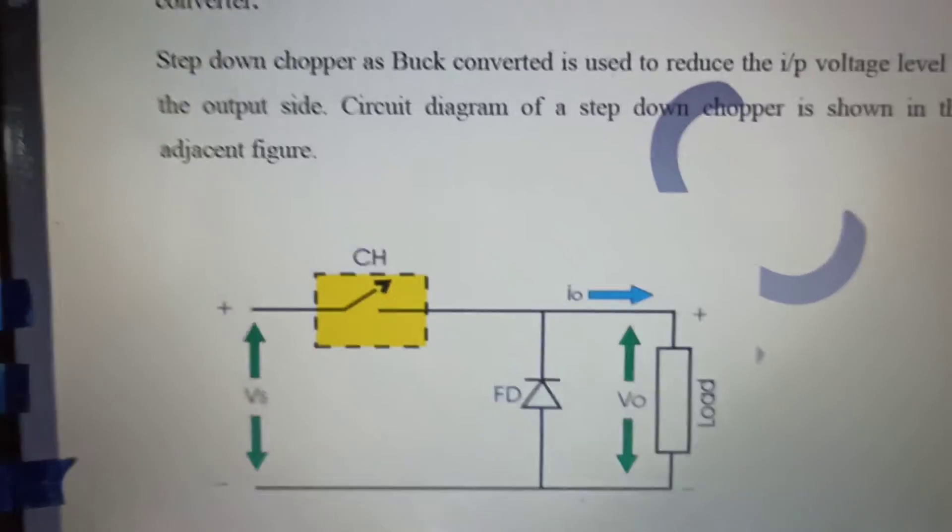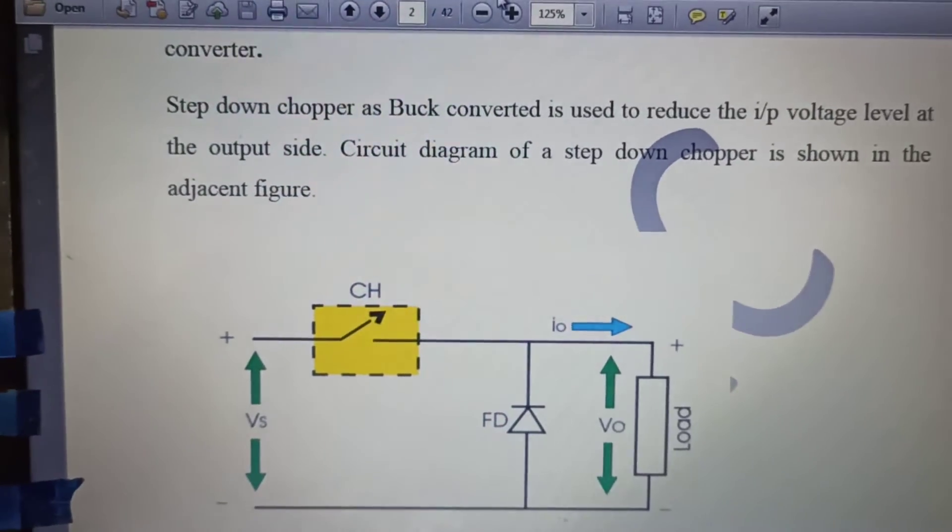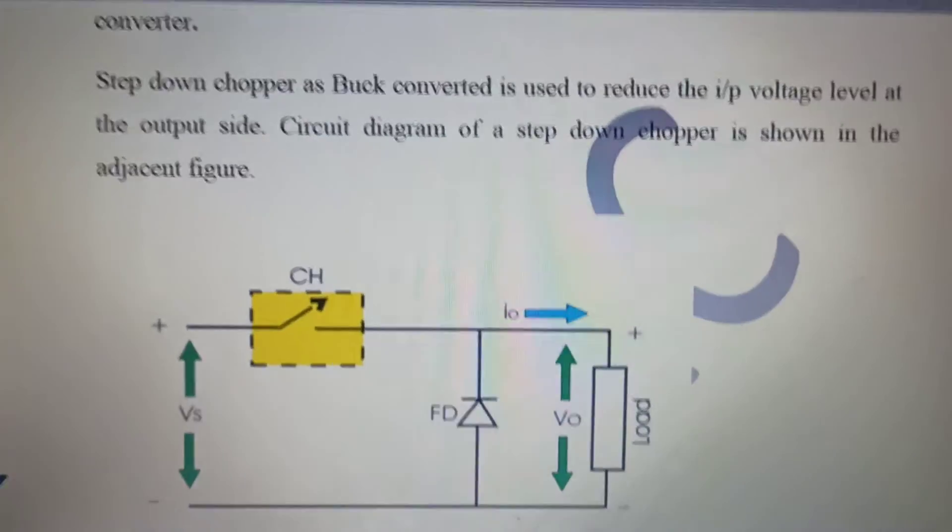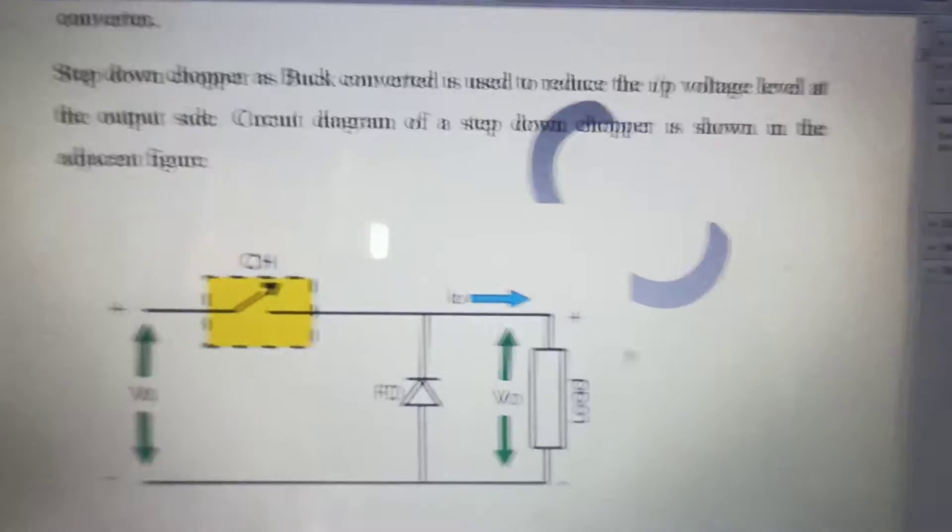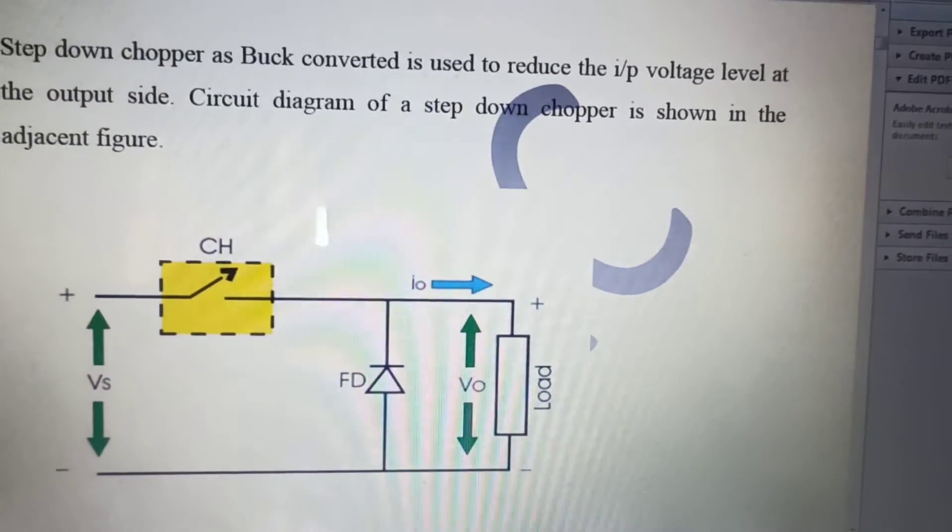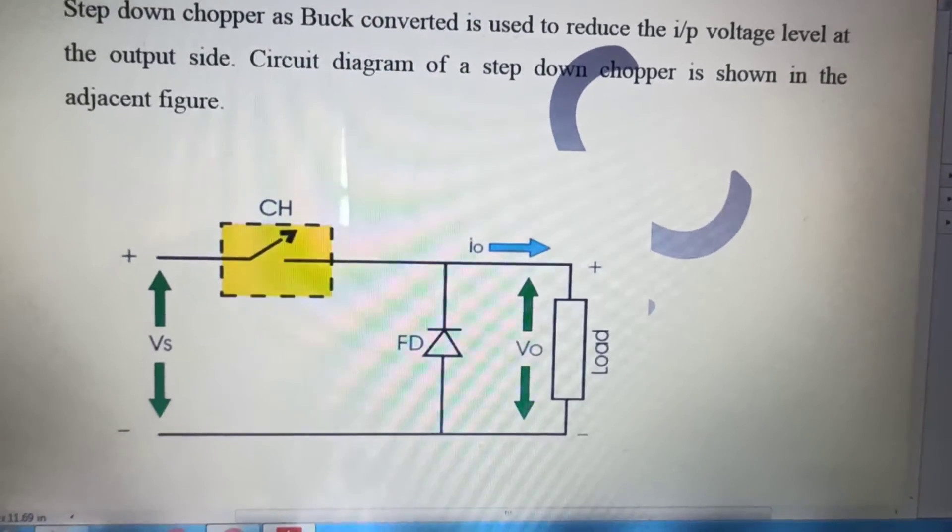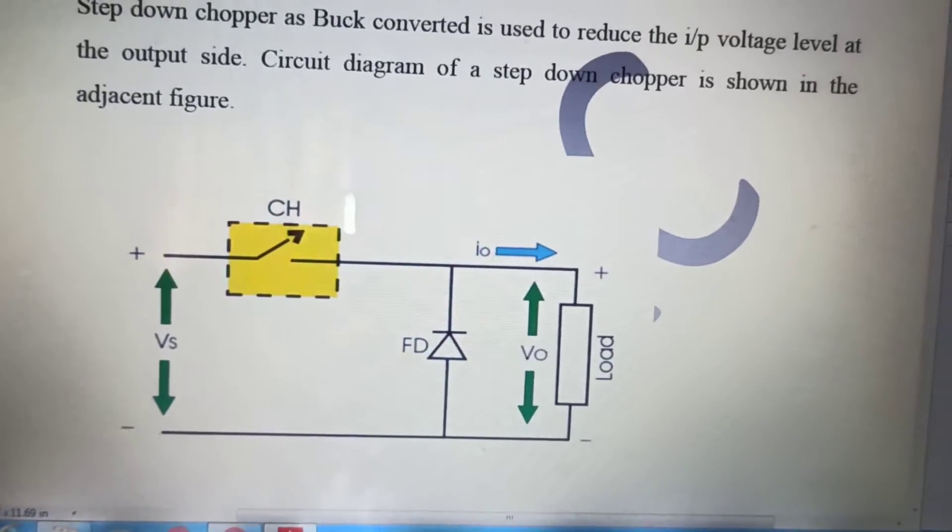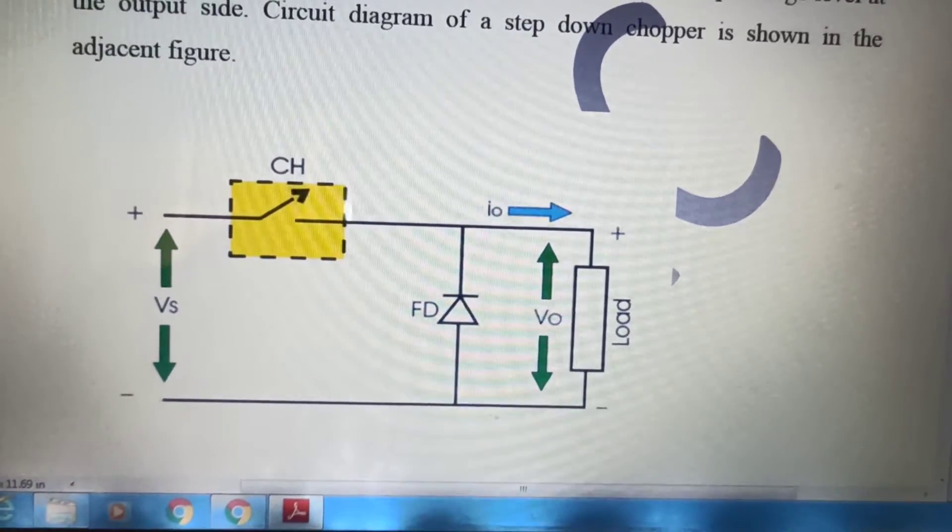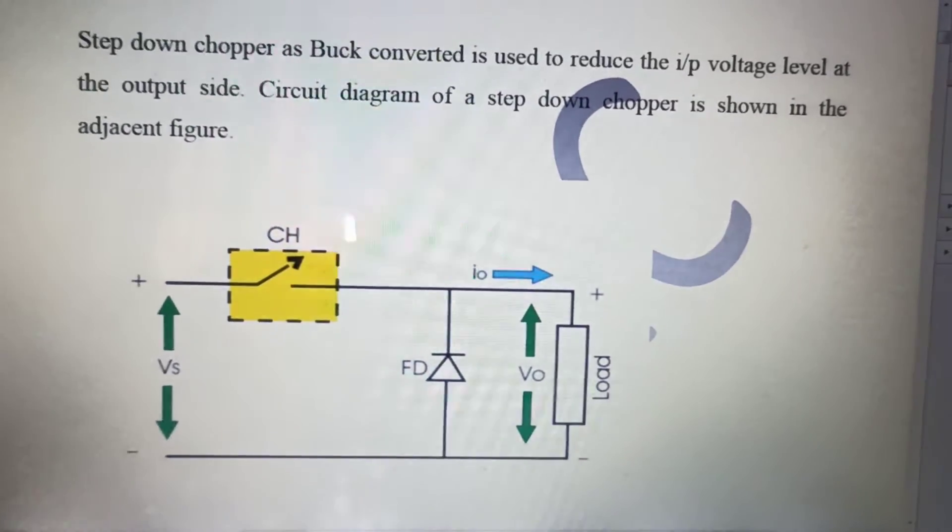In the previous lecture I discussed the basic formation of a chopper circuit. Now I would like to express something about the canonical switches and once the canonical switch is clear then I can move forward to the derivation of average output voltage that we are going to cover in this present lecture.